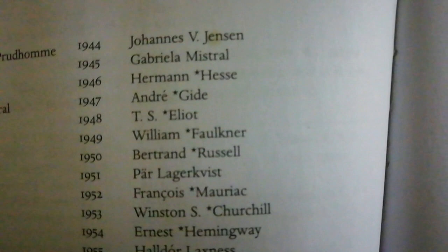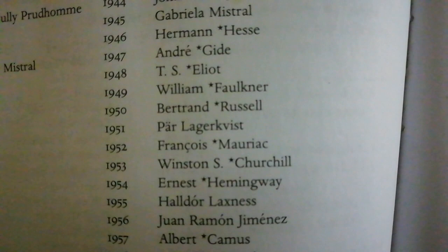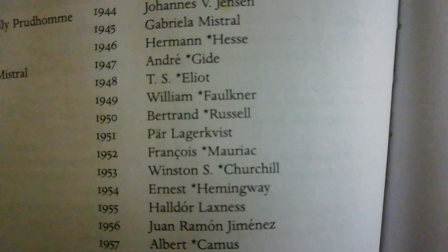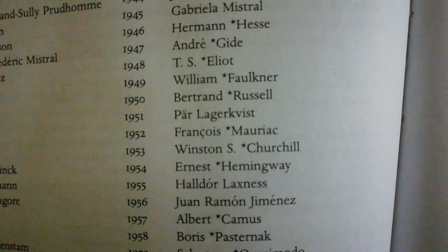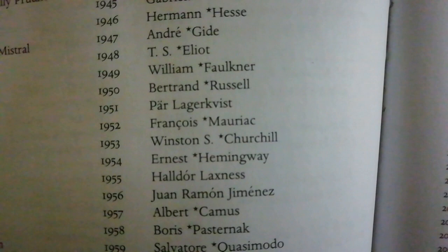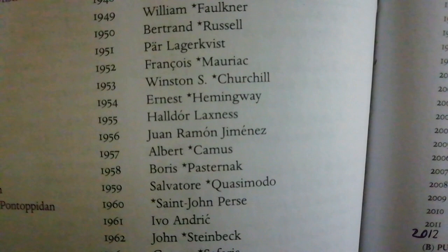Pearl S. Buck is especially noted for her work about China, which is very important. 1946 Hermann Hesse — his famous work is Siddhartha, so there is an Indian connection, making it important for Indian students. 1948 T.S. Eliot — very, very important, one of the most brilliant writers and one of the starters of modernism. Next, William Faulkner, equally brilliant, and Bertrand Russell — considered a genius, both a brilliant mathematician and writer.